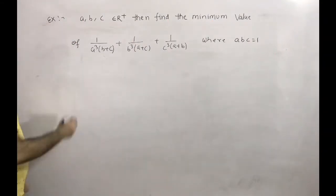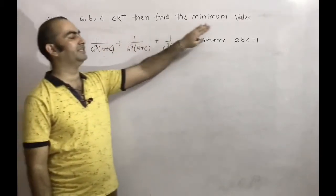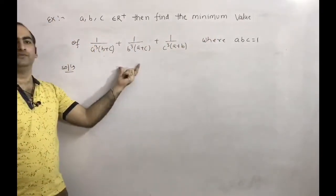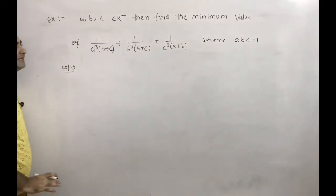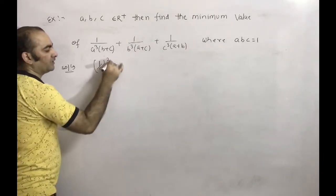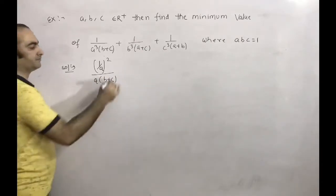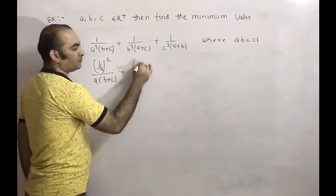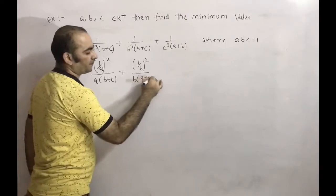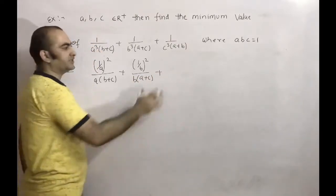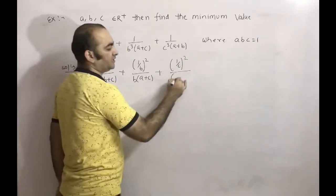Now for the solution. We rewrite the first term as (1/a)² divided by a(b+c), the second term as (1/b)² divided by b(a+c), and the third term as (1/c)² divided by c(a+b).